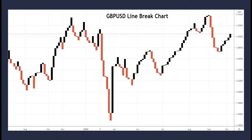Here is a simple example of the pound against the US dollar on a three line break chart. The reds are the down lines and the blacks are the up lines. We can see price on the vertical axis and the time scale along the horizontal one, although we'll talk about the concept of time in more detail later.